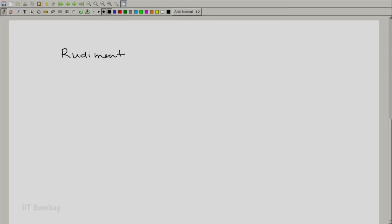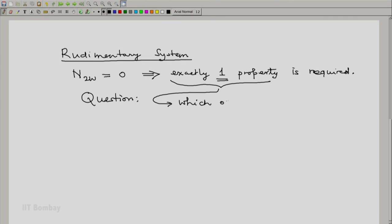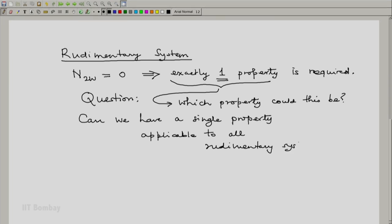It is interesting to know that for a rudimentary system, number of two-way work modes is 0. This implies that exactly one property is needed. The question that comes up is which property could this be? Can we have a single property applicable to all rudimentary systems? These questions lead to the concept of temperature, and for that the thermodynamic vehicle is the zeroth law to which we will now turn.